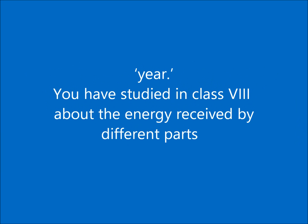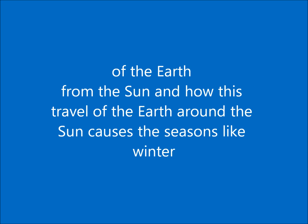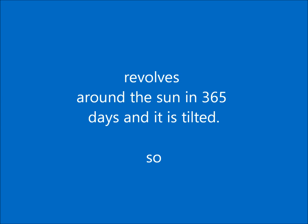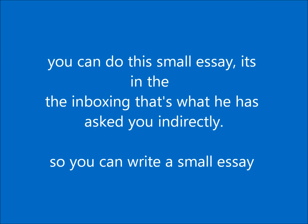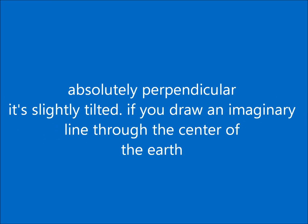You have studied in class 8 about the energy received by different parts of the earth from the sun and how the travel of the earth around the sun causes seasons like winter and summer. You can actually write a small essay on how we get seasons: we get seasons because the earth revolves around the sun in 365 days and it is tilted. This is what the textbook is asking indirectly, so write a small essay giving your understanding.